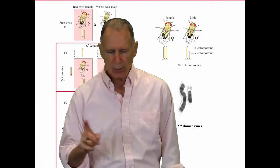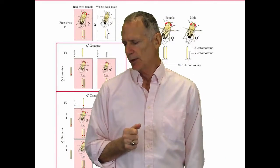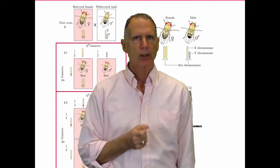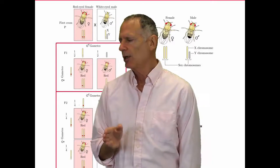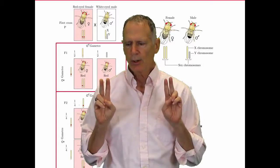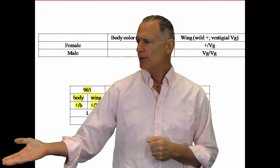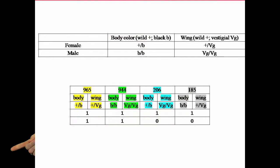Now, here's what is really unique about Morgan, and one of the great things that Morgan discovered. What he starts to do is he starts to look at multiple traits. He wants to look at how two traits behave. In this particular case, we're going to use body color and wing structures.